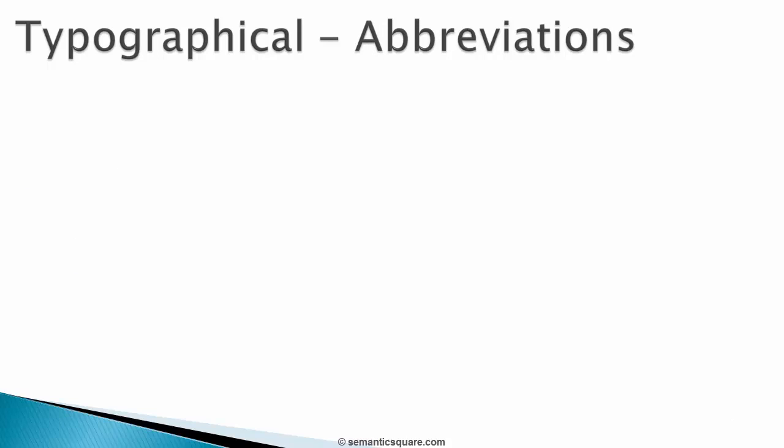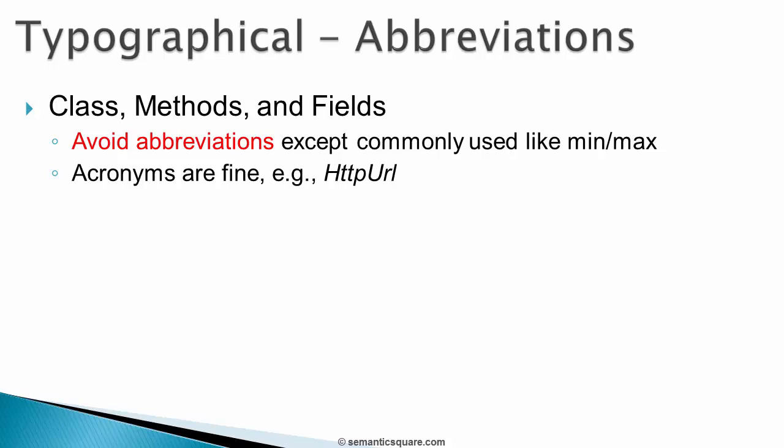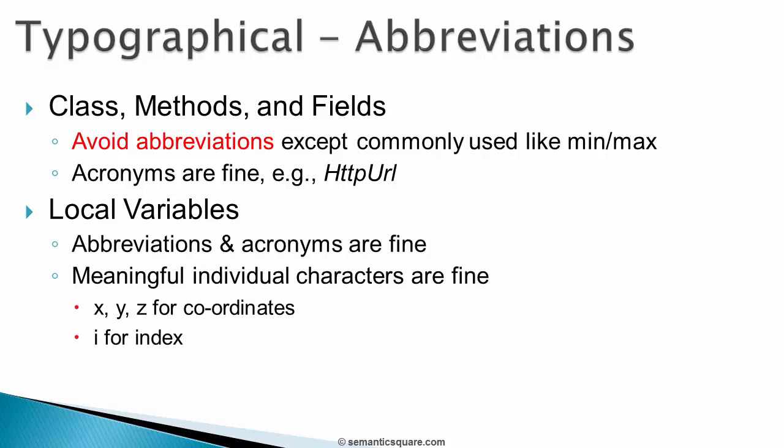The next typographical topic is about using abbreviations. For classes, methods and fields, avoid abbreviations — recall that fields imply static and instance variables. You may use abbreviations only for very commonly used names like min or max. Acronyms are fine. For local variables, both abbreviations and acronyms are fine. Individual characters are also fine, but only if used in a meaningful way — for example, x, y and z for coordinates, or i to keep track of an index like in an array.